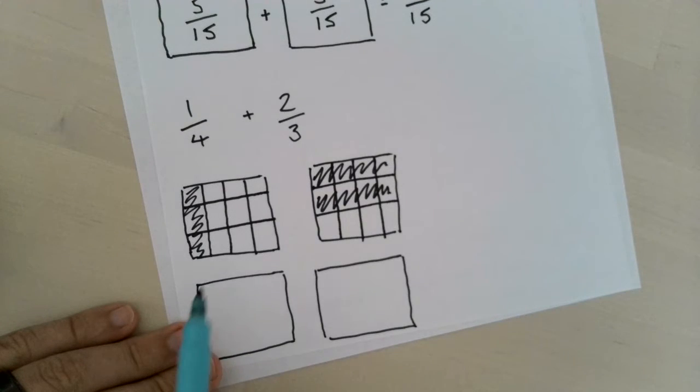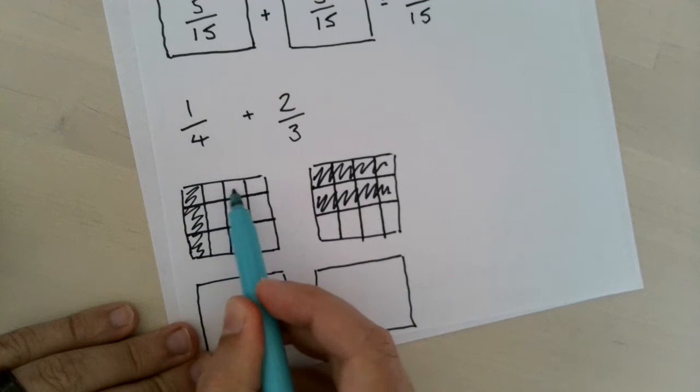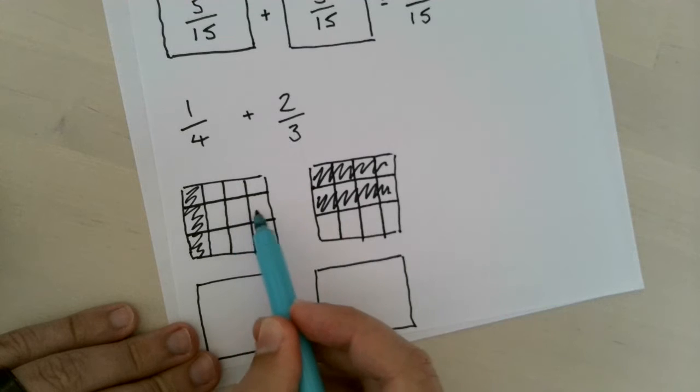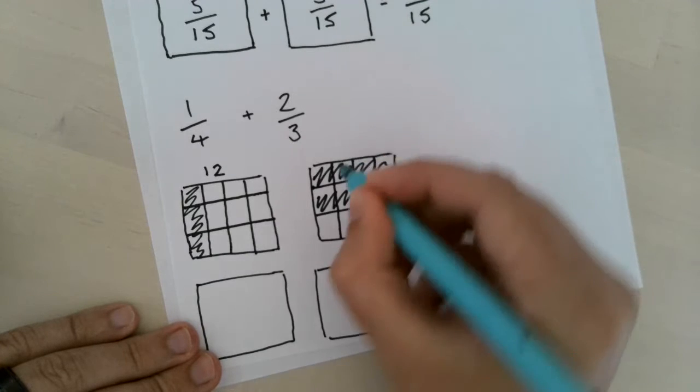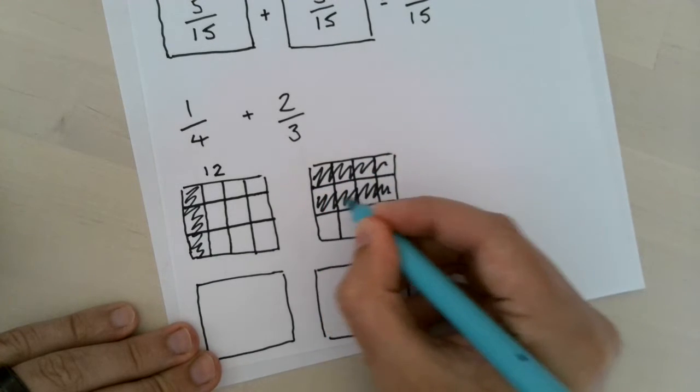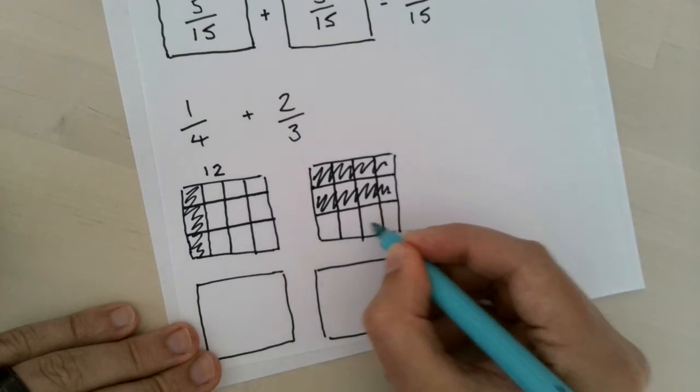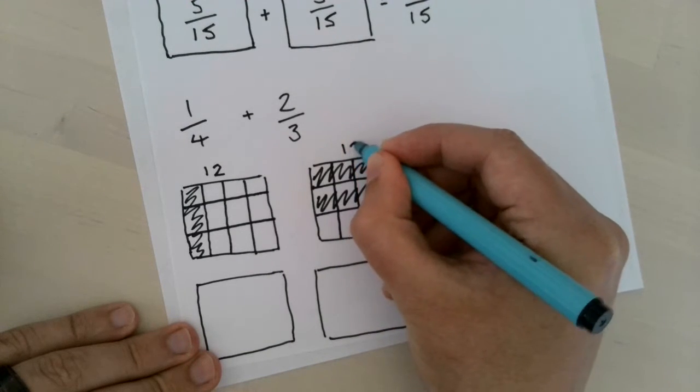Which has now left me, each shape we have 1, 2, 3, 4, 5, 6, 7, 8, 9, 10, 11, 12 - we have 12 parts. And we have 1, 2, 3, 4, 5, 6, 7, 8, 9, 10, 11, 12 parts in there.